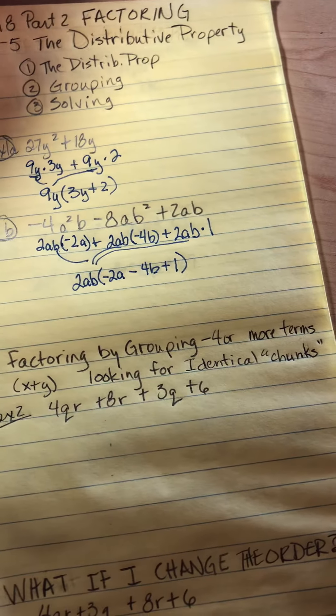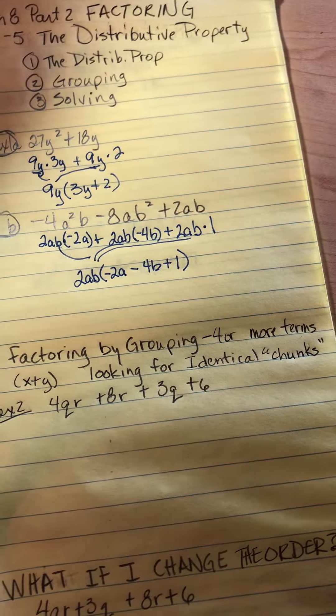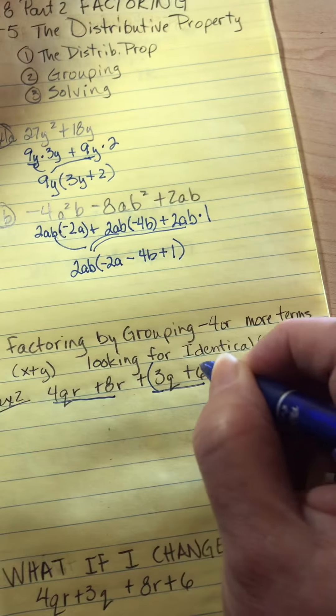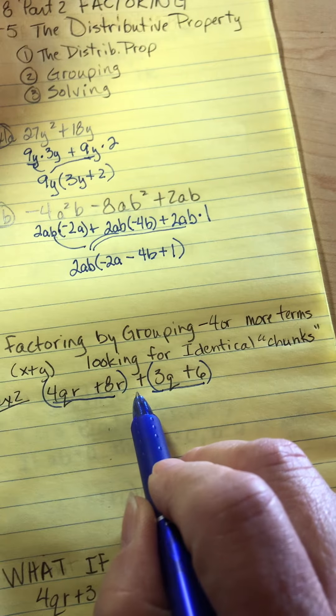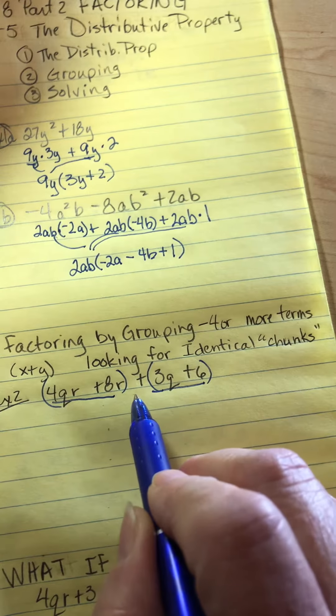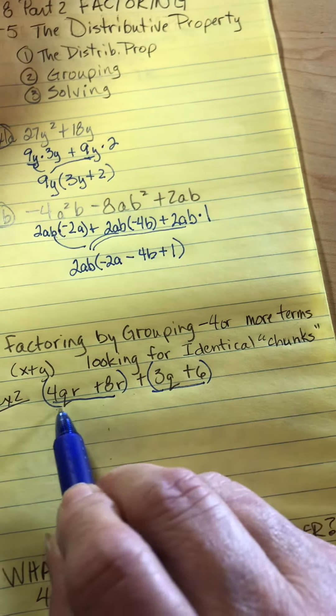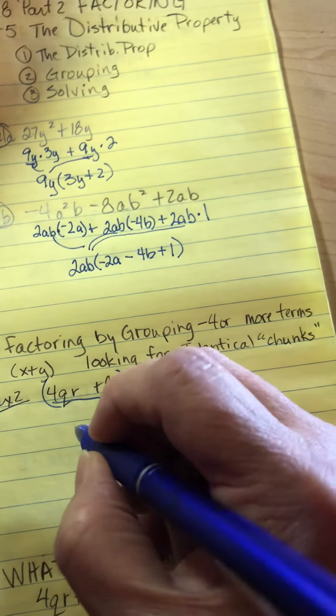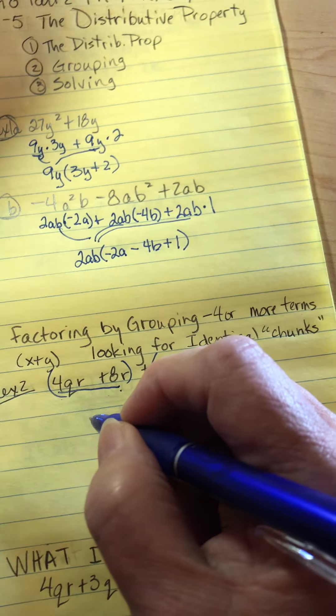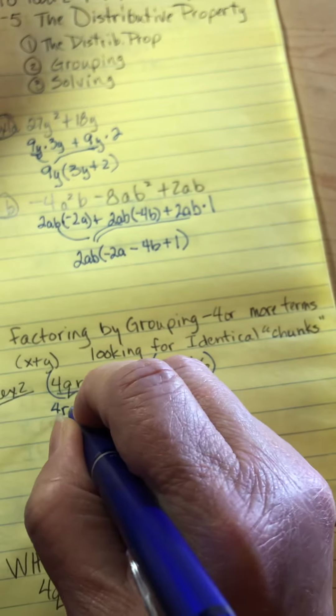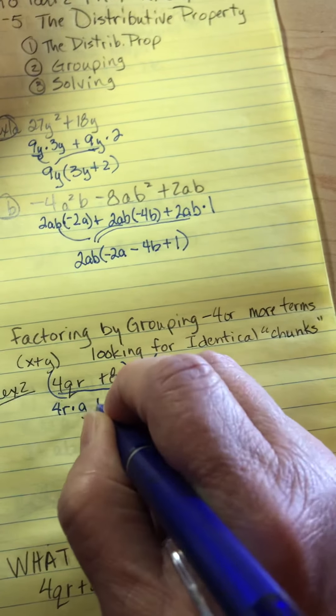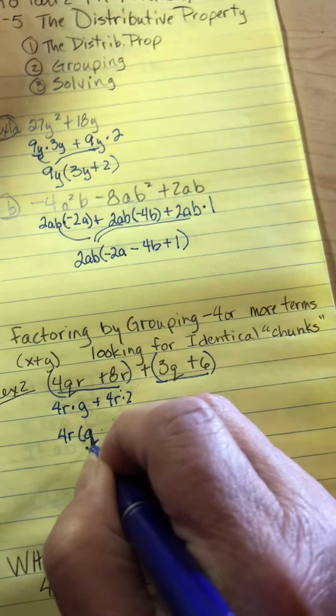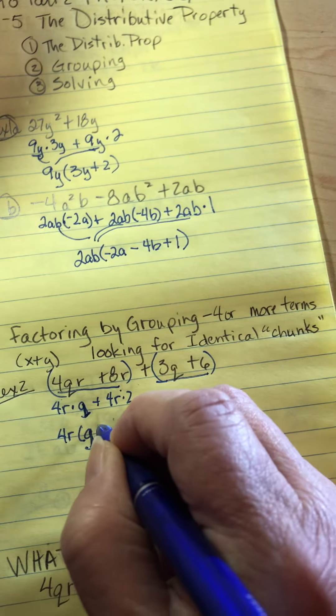The second thing we're going to look at in example 2 is factoring by grouping. That's when you have four or more terms. We're going to just put them in pairs. When I group them in pairs, I've got to have that plus in the middle. And yes, it's got to be a plus. If it was a minus, I would change it to plus a negative. I'm looking at this and I'm saying, oh, they're both multiples of four and they both have an R. So I'm going to pull out a 4R. This is 4R times Q, and this is 4R times 2. When I pull out the 4R, I've got Q plus 2 left.